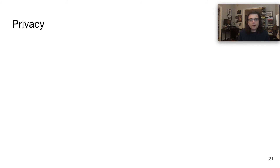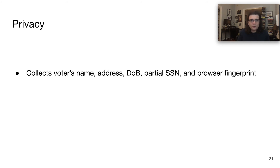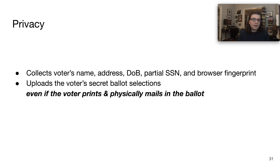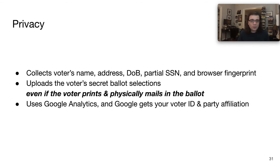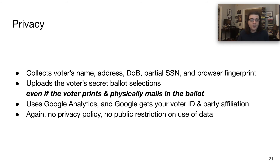So how well did Democracy Live fare in the realm of privacy? The system collects the voter's name, address, date of birth, and a partial social security number. But really interestingly, it also collects a browser fingerprint, which is a kind of tracking mechanism that's sort of like a super cookie — something you actually can't delete off your system, even in private browsing mode. It also uploads the voter's secret ballot selections to Democracy Live servers, even if the voter prints and physically mails in the ballot. Finally, the system uses Google Analytics, and Google gets your voter ID and therefore your party affiliation. And again, there's no privacy policy and no public restriction on any use of any of this data.